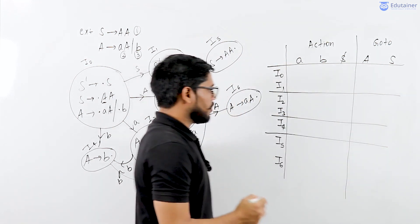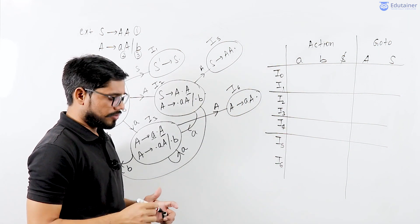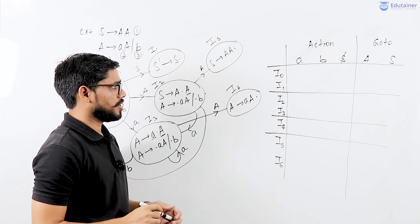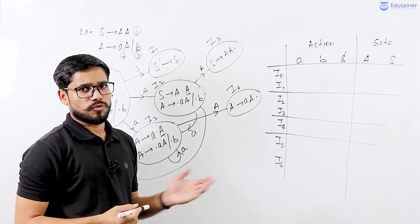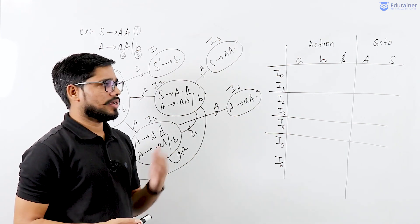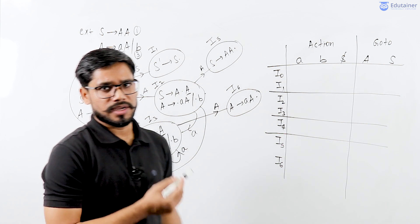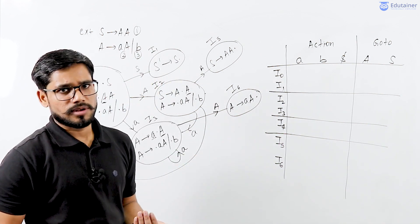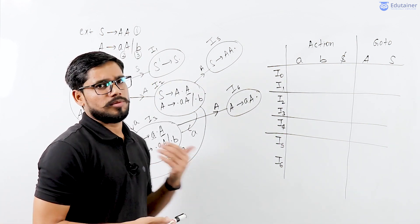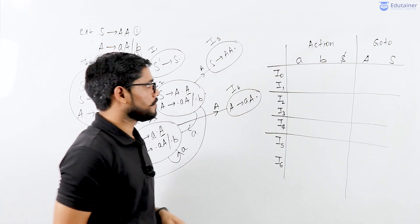The only difference between SLR0 and SLR1 parsing table is the final item move. In LR0 the final item will be placed in the entire action part, while in SLR1 table the final item will be placed in the follow of the left-hand side.